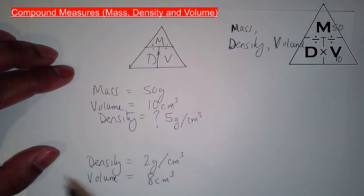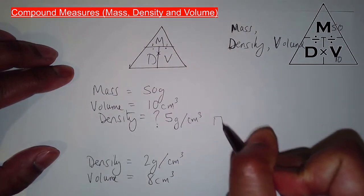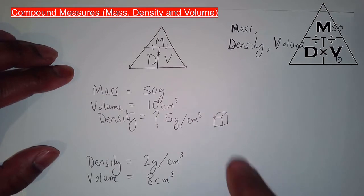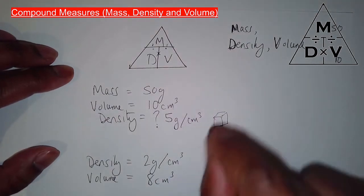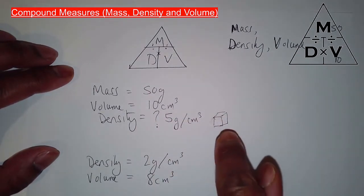In other words, for this substance, 1 cm³, 1 little cm³ like that, that's roughly 1 cm³, has a mass of 5 grams. So if I took a small chunk out of that thing, like a little cube out of it, its mass would be 5 grams.